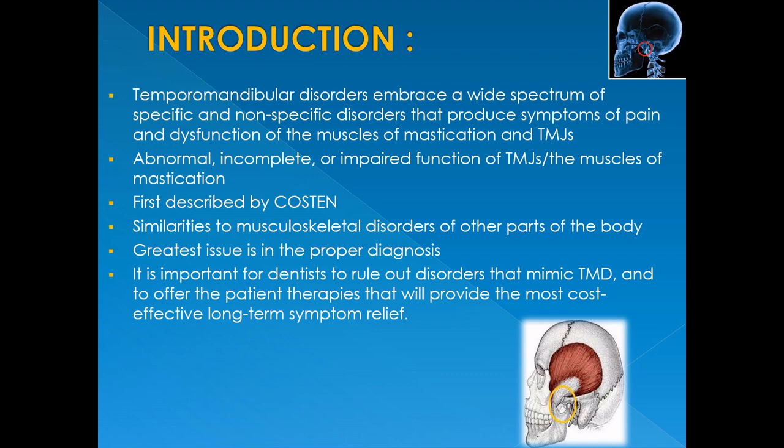Introduction: The temporomandibular disorders embrace a wide spectrum of specific and non-specific disorders that produce symptoms of pain and dysfunction of the muscles of mastication as well as TMJs. GPT-9 defines TMDs as conditions producing abnormal, incomplete or impaired function of the temporomandibular joints or the muscles of mastication. This was first described by Causton, who claimed this to be reflexes due to irritation of the auriculotemporal or the chorda tympanic nerves, and it has similarities to musculoskeletal disorders of other parts of the body.